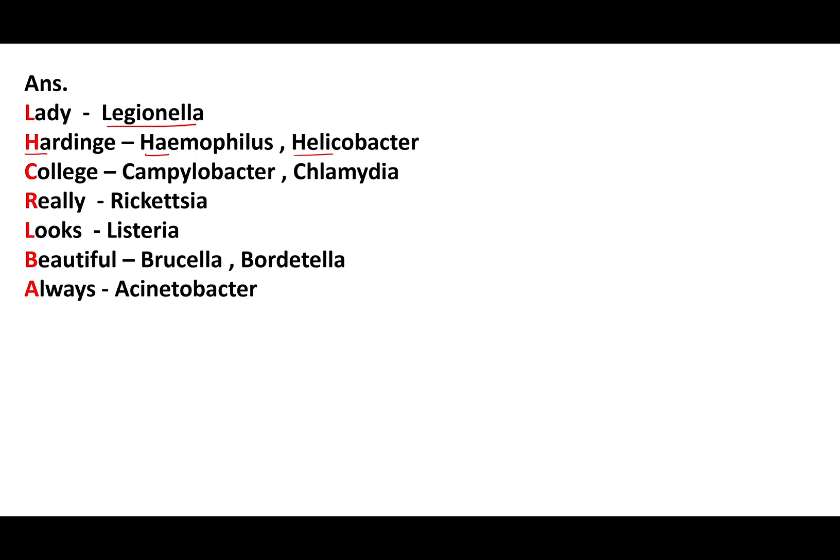Chlamydia exists in two forms: extracellular elementary body and intracellular reticulate body. Trachomatis: serovars A, B, Ba, C cause trachoma; D–K cause inclusion conjunctivitis, genital chlamydiasis, and infantile pneumonia; L1, L2, L3 cause LGV with incubation period 3–30 days. Inclusion bodies in psittacosis: Levinthal-Cole-Lillie bodies. In trachoma: Halberstaedter-Prowazek bodies. Molluscum contagiosum shows Henderson-Paterson bodies.